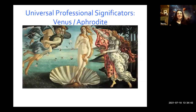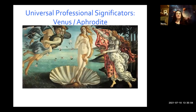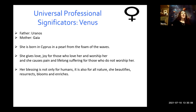Let's move to Venus. If you look at her mythology, her father is Uranus and mother is Gaia. She is known as Aphrodite. She was born in Cyprus from the form of waves, as described in the picture. She usually gives love and joy for those who love her and worship her, and causes pain and lifelong suffering for those who do not. Her blessing is not only for humans but for all nature — she beautifies, resurrects, blooms, and enriches everything she touches.